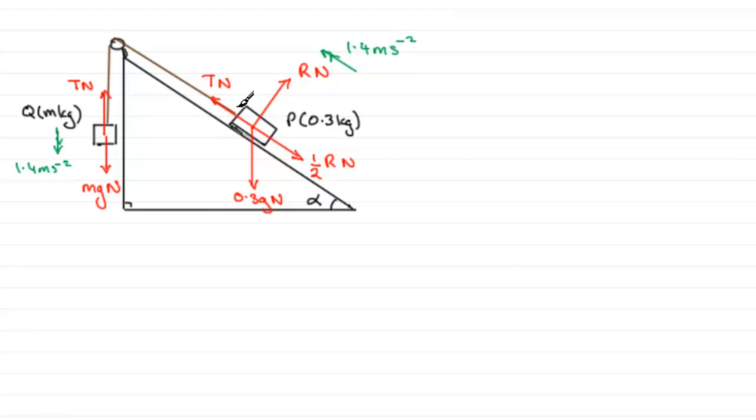Okay, so we've got the diagram marked in with all our forces, the acceleration arrows. We've also got this angle alpha. We're told that the tan of alpha equals 3 quarters. And it's worth mentioning that if we just mark that in here, tan alpha equals 3 quarters.